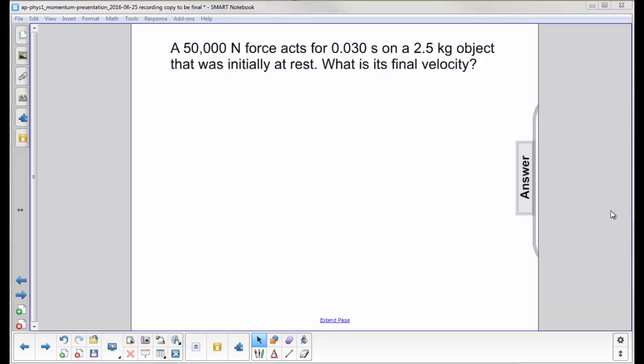A 50,000 newton force acts for 0.030 seconds on a 2.5 kilogram object that was initially at rest. What is its final velocity?